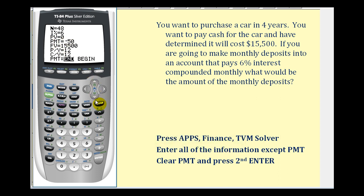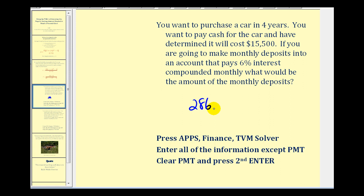We're going to clear this amount and then press Alpha Enter, and it will tell us the monthly savings amount that's required: two hundred eighty-six dollars and fifty-two cents. Notice that it is negative because we will have to pay this amount on a monthly basis in order to reach our financial goal.